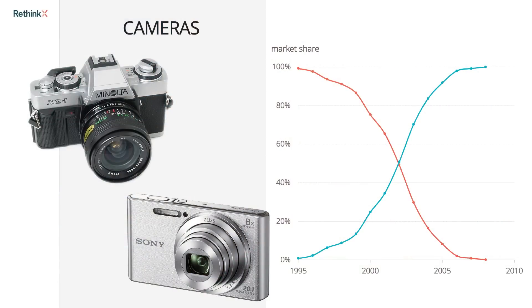Disruptions happen when new technology emerges that offers the same or better capability as an older technology at a fraction of the cost. And as a result, the new technology overwhelmingly outperforms and therefore outcompetes the older one. This is why we say disruptions are driven by economics. Straightforward economic logic pulls market demand away from the old technology because the new technology offers a massive savings of money, time, energy, materials, or unwanted side effects.